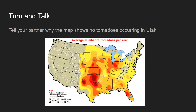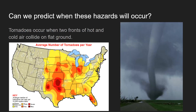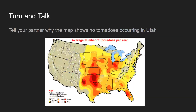You might ask yourself why the map shows no tornadoes in Utah. The reason is that tornadoes have to happen on flat areas, and Utah is not flat — it's up in the mountains. Oklahoma is lower in elevation and very flat, with no mountains, which is why you get so many tornadoes there. You don't see them in the northwest because it's very mountainous and tornadoes don't have places to build and grow.